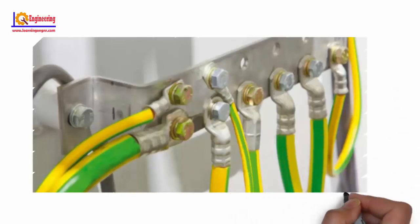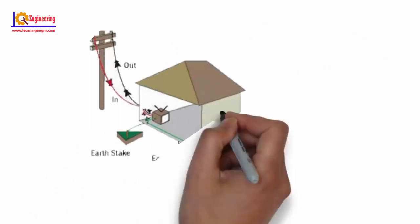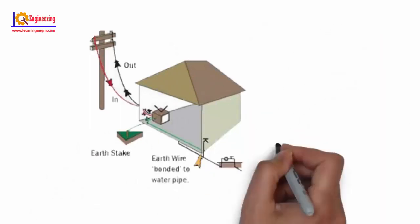Earthing can be done by electrically connecting the respective parts in the installation to some system of electrical conductors or electrodes placed near the soil or below the ground level. If your home electrical system does not provide an earthing connection and your device connects to the live wire...